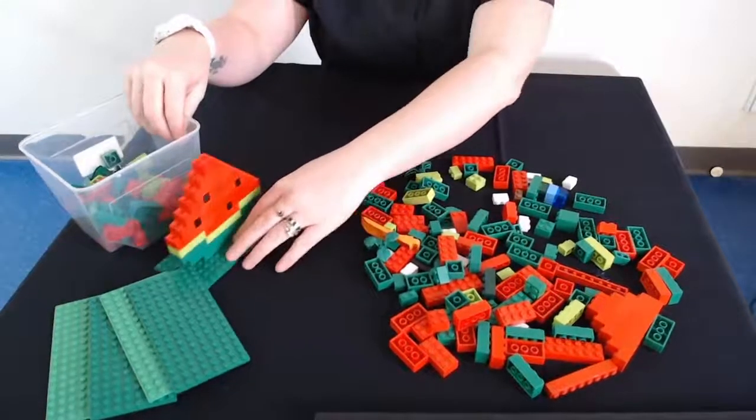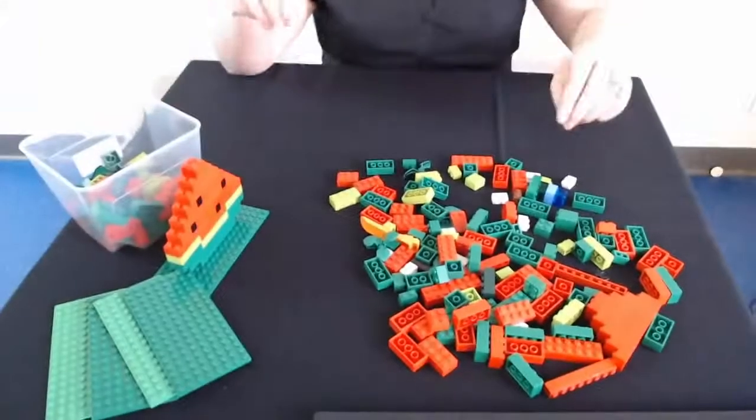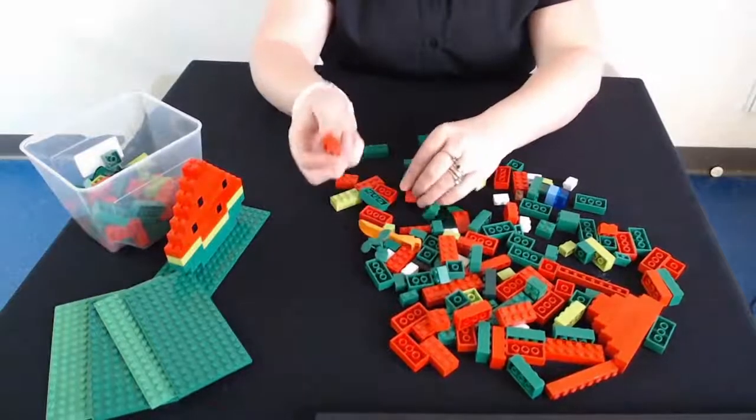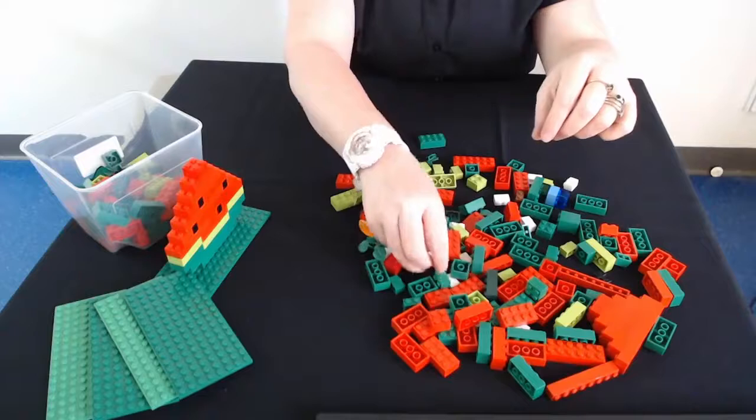Now I'm going to go through and show you how to make a watermelon slice in another view. Okay, let's pop that one there. All right. This time we need green, we need red, and we need some white pieces.